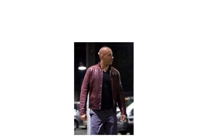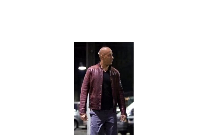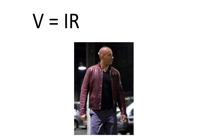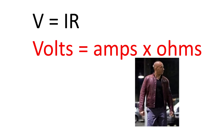Now this is Vin Diesel. I could so easily take him in a fight. But here he is wearing his red jacket. Vin is in red. And that reminds me that V equals IR, which gives me voltage equals current times resistance. Remember we're using the letter I for current, and resistance is measured in ohms.